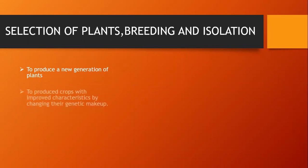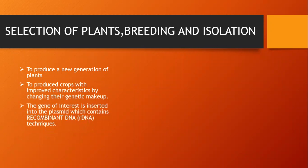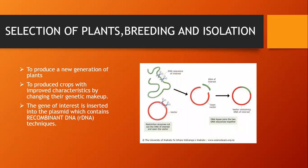Here are some steps of genetically modified organisms used to produce a new generation of plants. To produce crops with improved characteristics, we use genetic modification technique. The first step is cutting the gene of interest using a specific enzyme called a restriction enzyme, which is then inserted into a plasmid containing the recombinant DNA. The insertion of the recombinant DNA with the gene of interest is performed by DNA ligase, which joins two DNA sequences together.